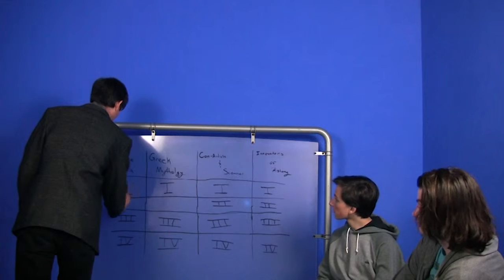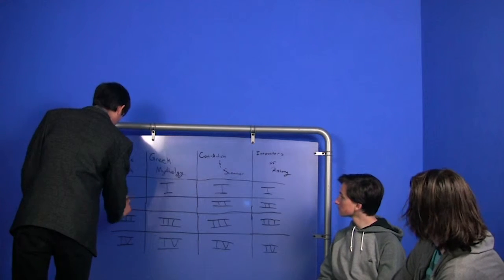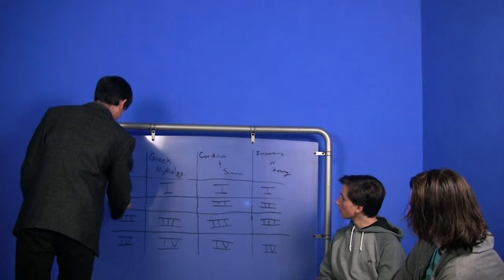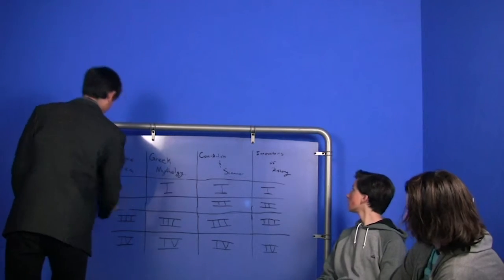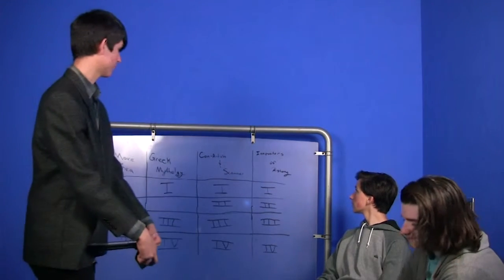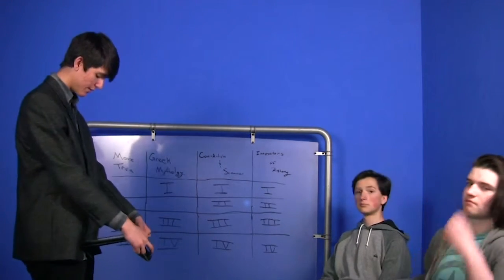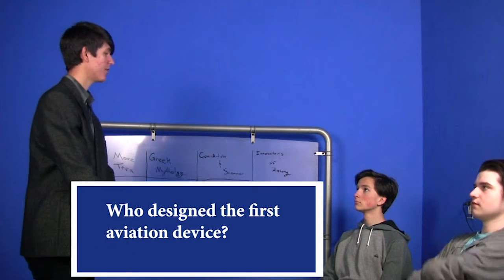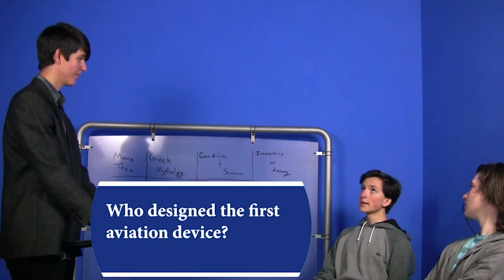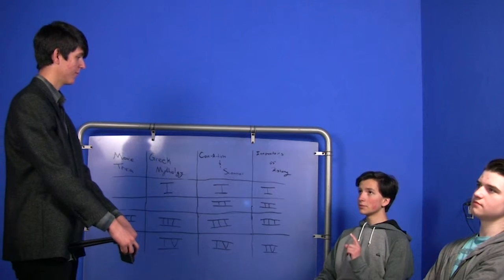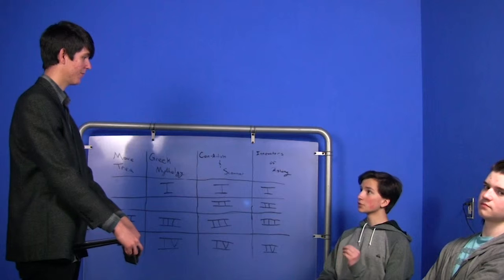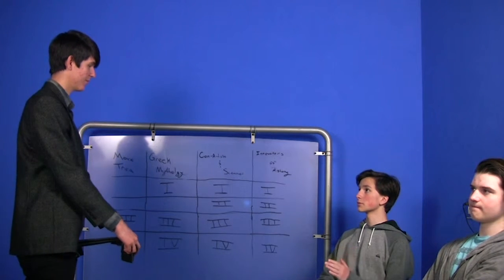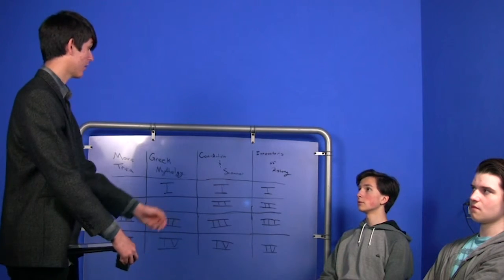Now, Jordan, choose a question. I'm going to take Innovators for three for one. Okay. Who designed the first aviation device? Design? The first design was Leonard DaVinci's first developed aviation device. It was Wilbur and Orville Wright.